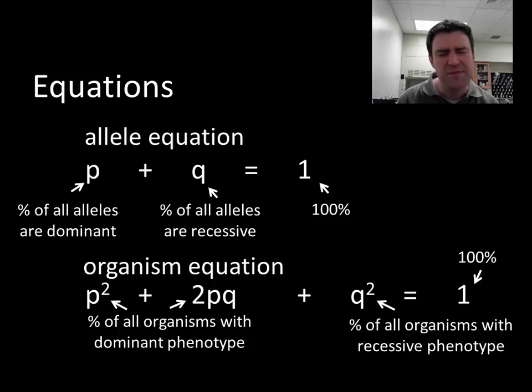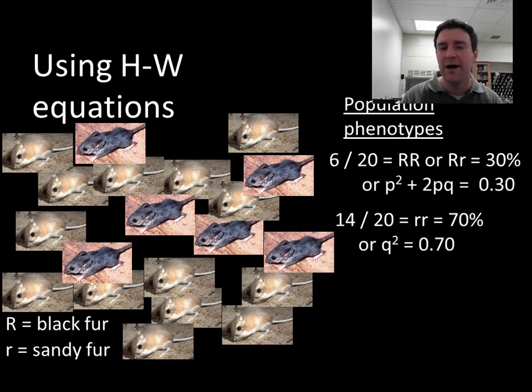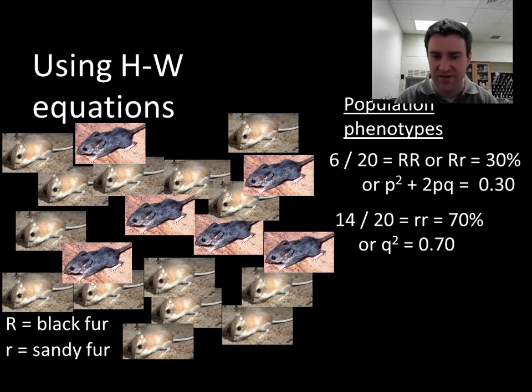All right, so let's apply these equations. What if I had a population of mice? Let's say there's just one gene I'm looking at, two different phenotypes. Let's say that black fur is dominant over sandy colored fur, and you can see that this is just yet another example I'm showing you here where it just so happens that the recessive phenotype is more widespread. So if I counted all those up, I'd see that 70% of my organisms are sandy color in fur.